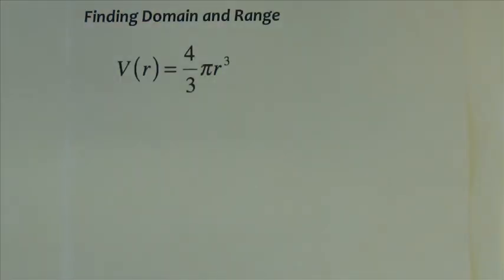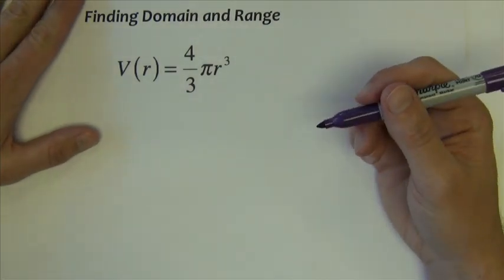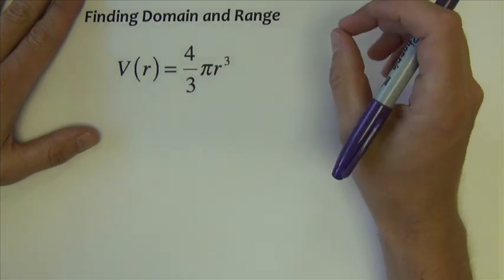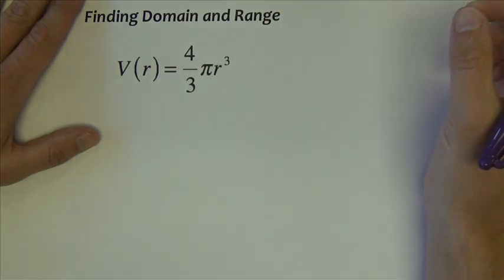I'd like to do one more domain and range problem, one that's just kind of an interesting problem. We said that domain can be restricted by really two things that cause concern. One is square roots, the other is division. There is another thing that we need to look for, and that is typically when we're doing application modeling type problems.